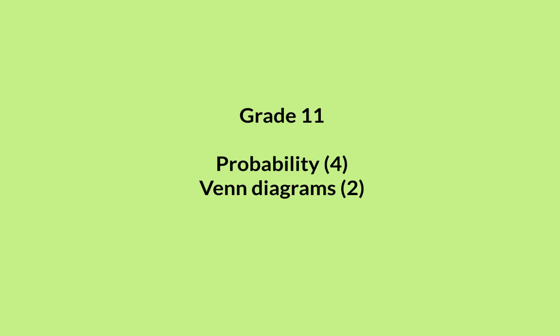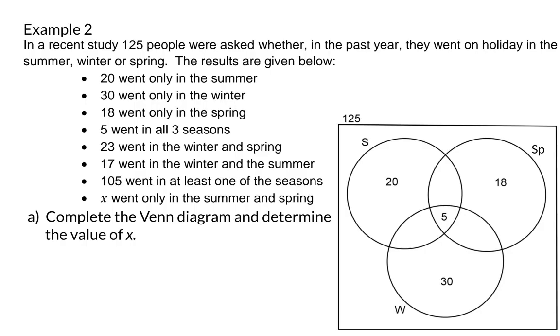In this lesson, we continue with Venn diagrams. Example 2. In a recent study, 125 people were asked whether in the past year they went on holiday in the summer, winter or spring. The results are given below.